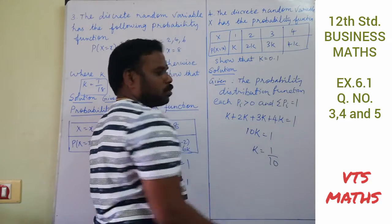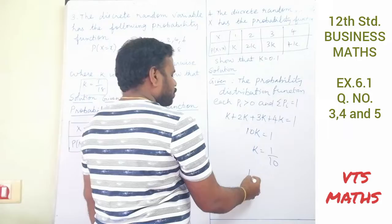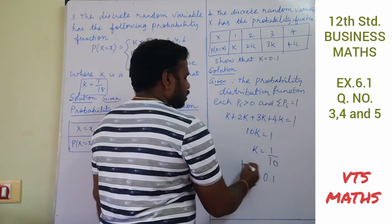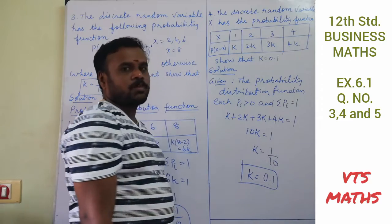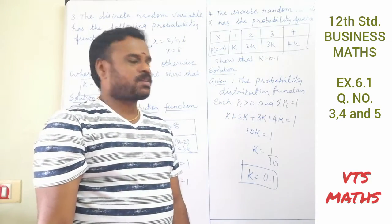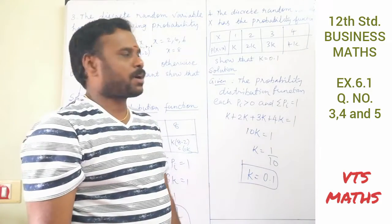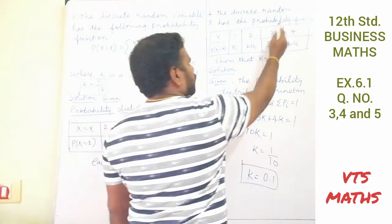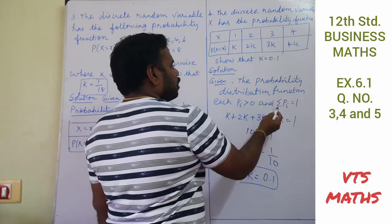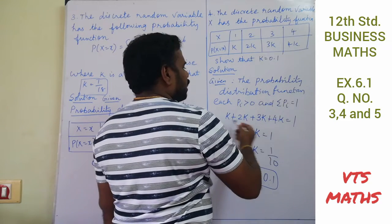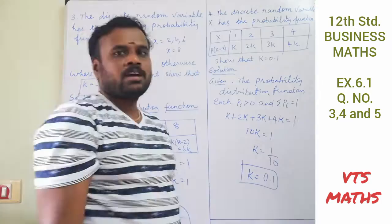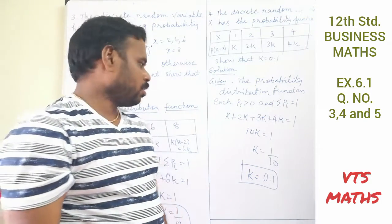So k = 1/10. In decimal form, k is equal to 0.1. Therefore the value of k is equal to 0.1.